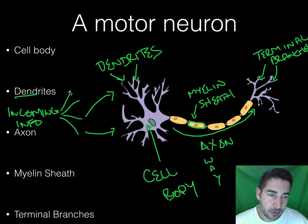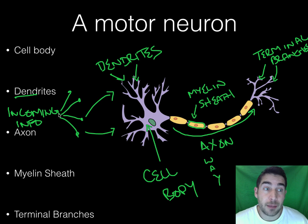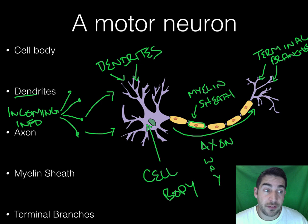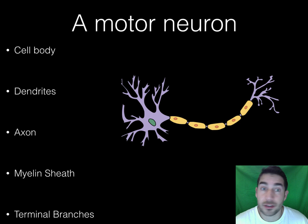These are the terminal branches from the other cell sending information, and the whole cycle just repeats multiple times per second — which is incredible. So that's part one of neurons. We're breaking this up into a bunch of different parts, so stick around for part two. Thank you.